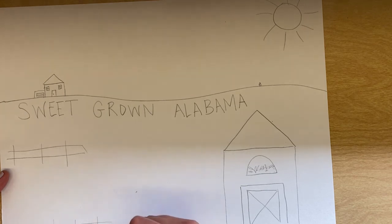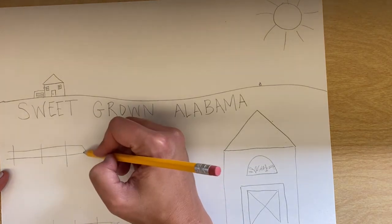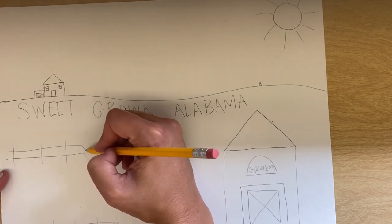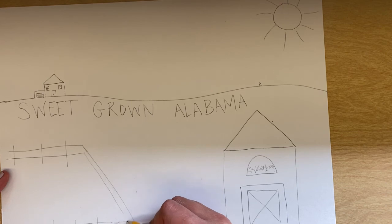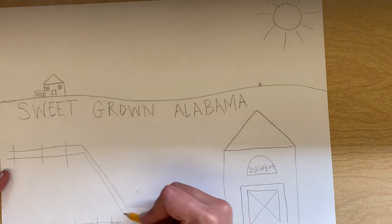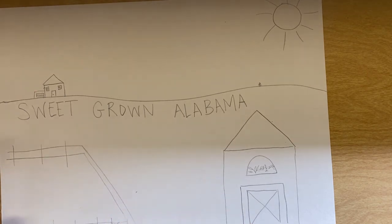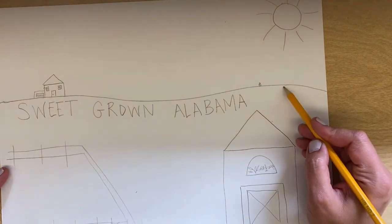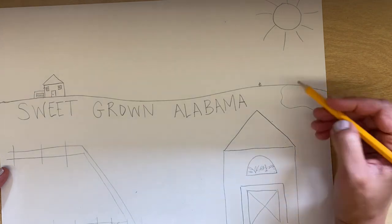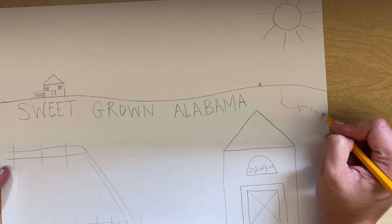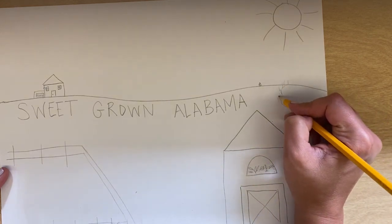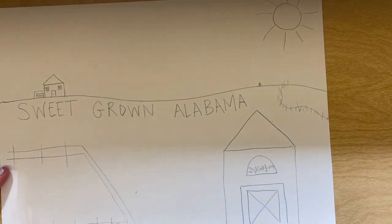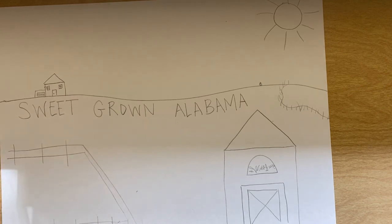I might draw some cows in here, I might draw a pond back here, maybe on the horizon, and draw some grass around my pond. So get really creative with what you want to draw. Alright, have fun.